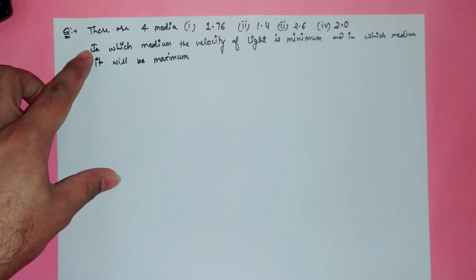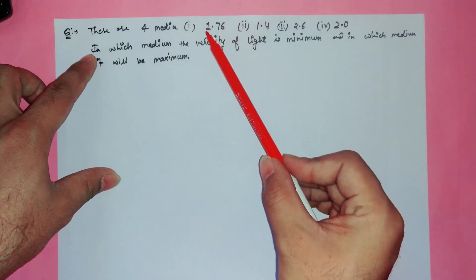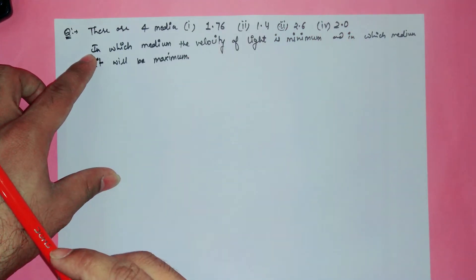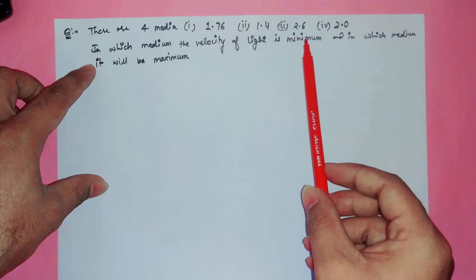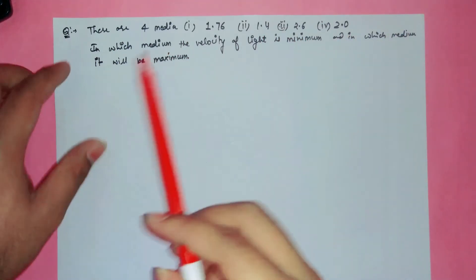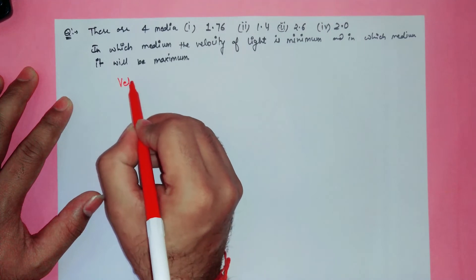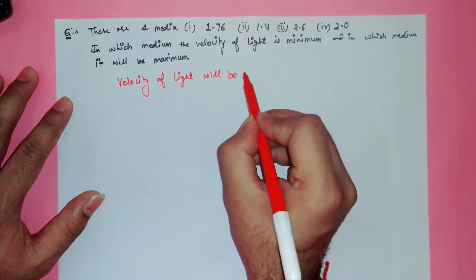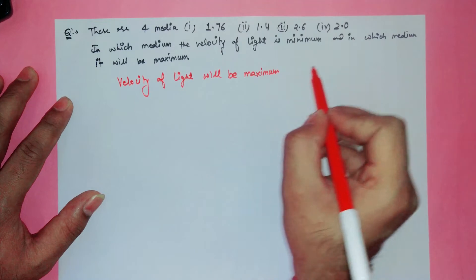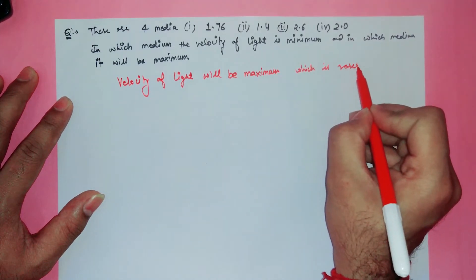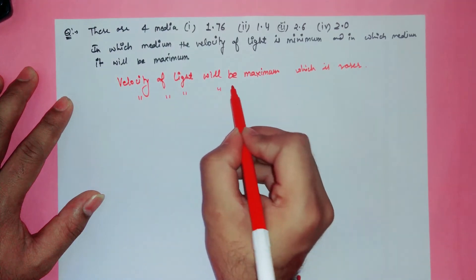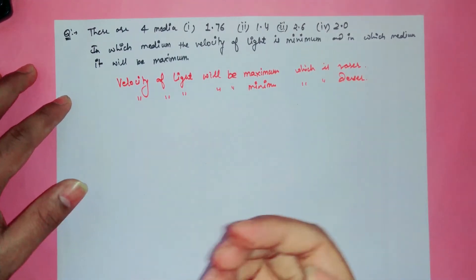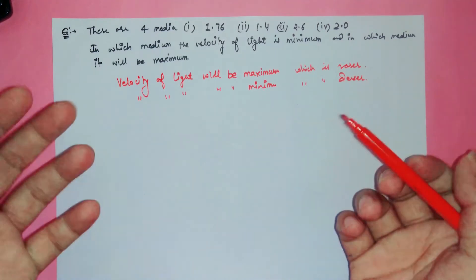Next question: there are four media with refractive indices 1.76, 1.4, 2.6, and 2.0. We have to find in which medium the velocity of light is maximum and in which it is minimum. We know that velocity of light will be maximum in the rarer medium and minimum in the denser medium.